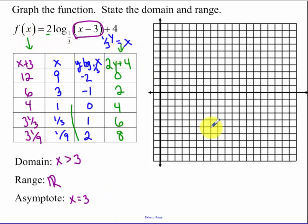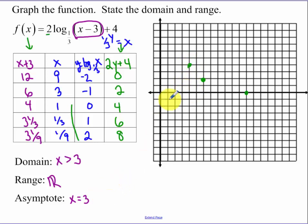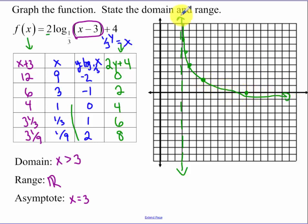You're plotting the far columns versus each other: 12 and 0, 6 and 2, 4 and 4, and then 3 and 1 third. Let's put in our asymptote so we don't cross that wall — at x equals 3. So that's a barrier we're never going to cross. Approximating these last two values: we have 6 and 3 and 1 third, and then 8. And it looks something like that — that's what our graph looks like when your base is a fraction.